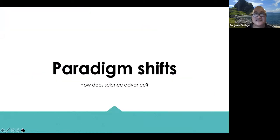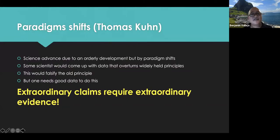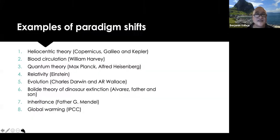How does science advance? It's due to a paradigm shift. That is in the reading on Kuhn. What is a paradigm shift? According to the philosopher of science Thomas Kuhn, science advances not due to an orderly development but by paradigm shifts. Some scientists would come up with data that overturns widely held principles and will falsify the old principle that has been accepted for so long. But in order to do that, you need good data. There is this important cliche in science: extraordinary claims require extraordinary evidence. So if you think that the COVID vaccine is useless, then you have to have extraordinary evidence to say that in a scientific way because all of the science data would say that the vaccines work. But of course they don't work 100% of the time, but most of the time they would work.